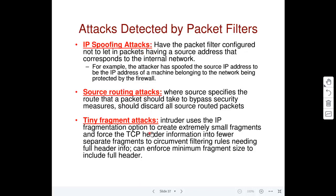In the IP header, the options field can be used to specify intermediate networks through which a packet should be forwarded — this is source routing. Due to security issues, you don't want the source to control what route a packet takes. When a firewall sees a packet with source routing information in the IP header, the packet filter firewall can simply drop such packets.